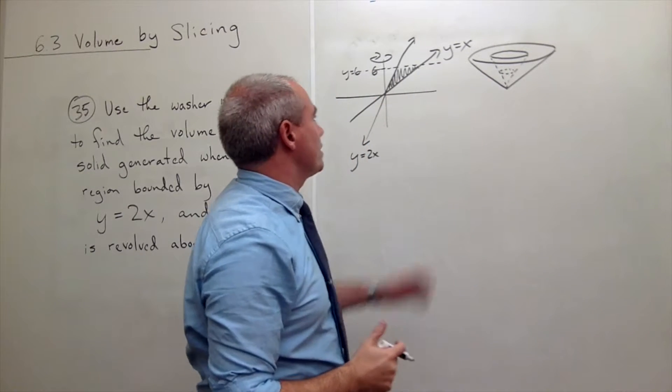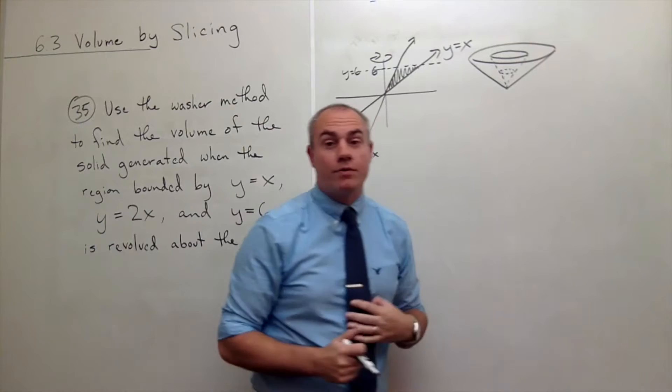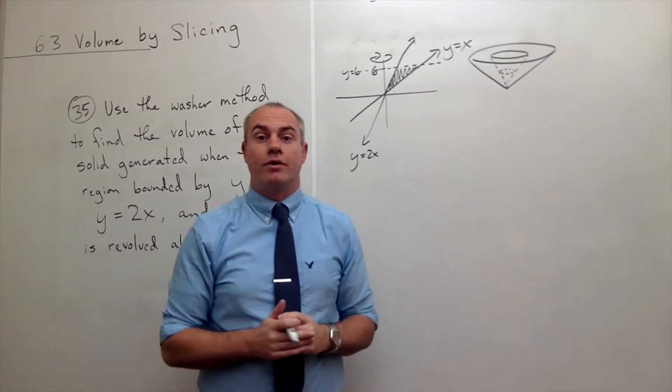So in the middle we have a smaller cone cut out of the middle. So you can see it's kind of like a cone with a little cone cut out. How do we find the volume of something like this?